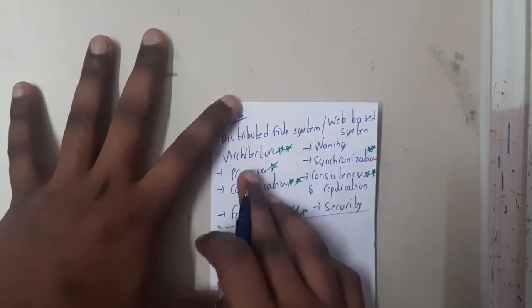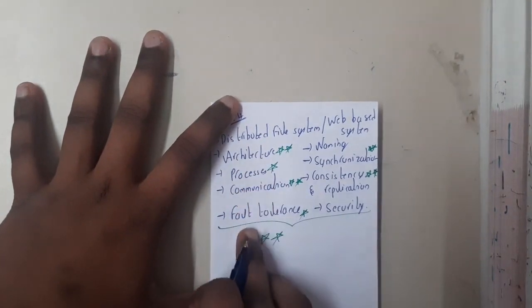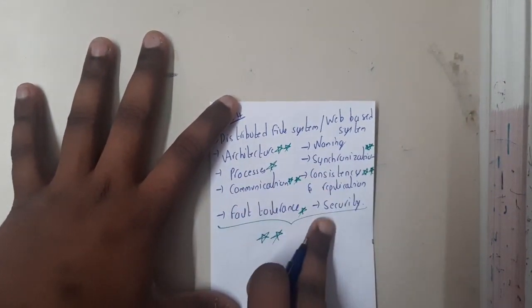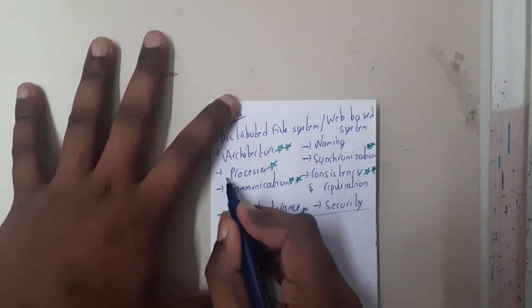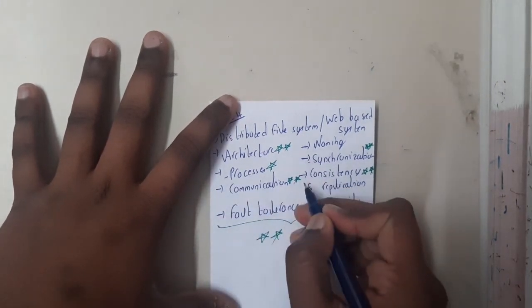If you recall, same as how we discussed for other units - that is distributed file system and web - we discussed about architecture, processing, communication, fault tolerance, naming, synchronization, consistency, and replication. The same topics we discussed, though I think we did not discuss processing and synchronization.